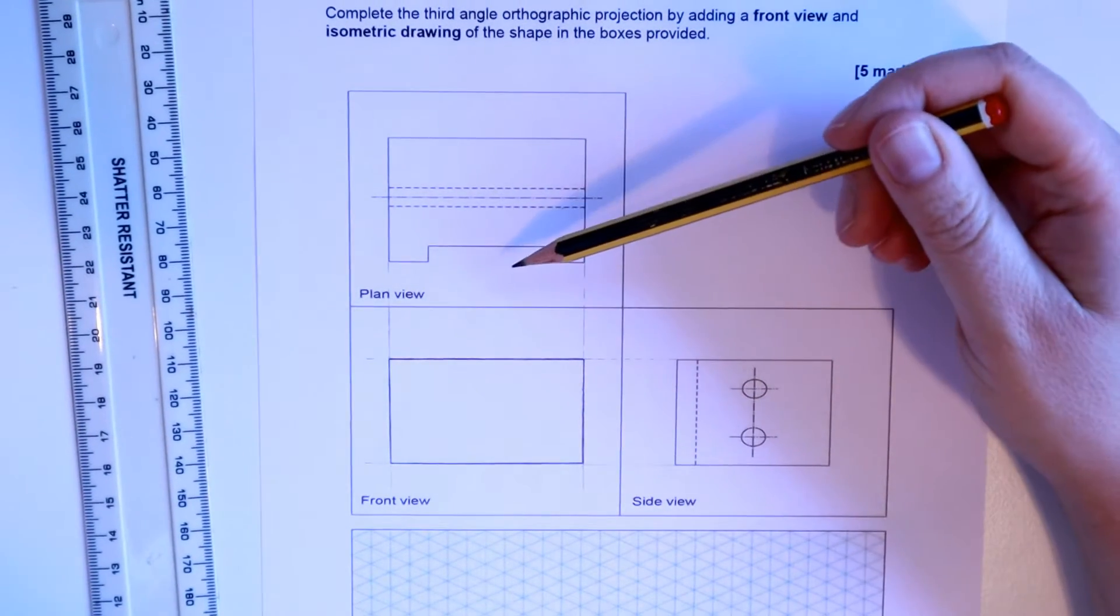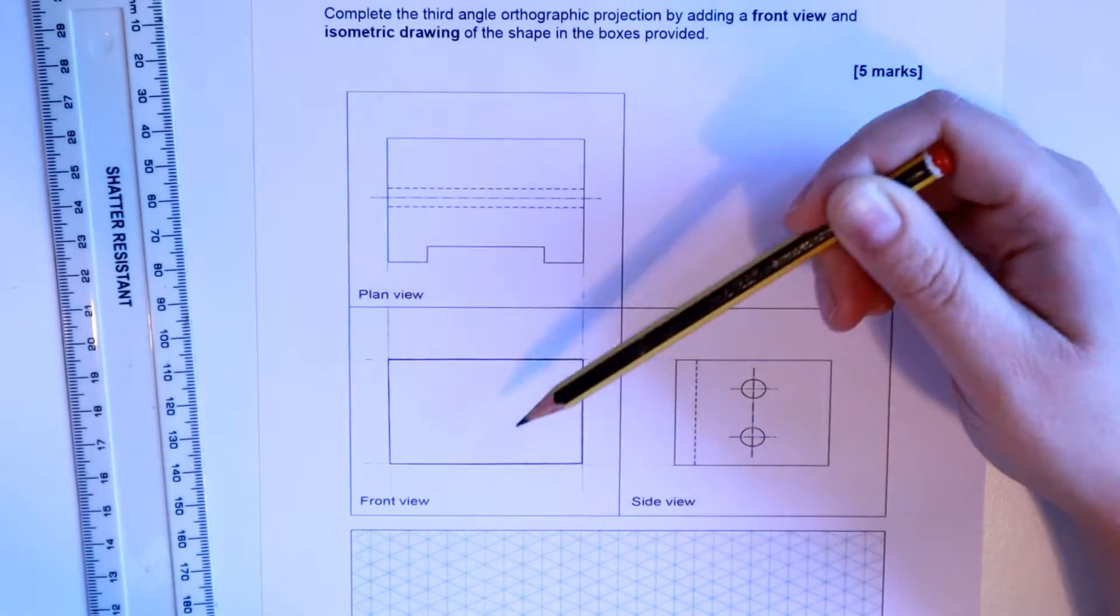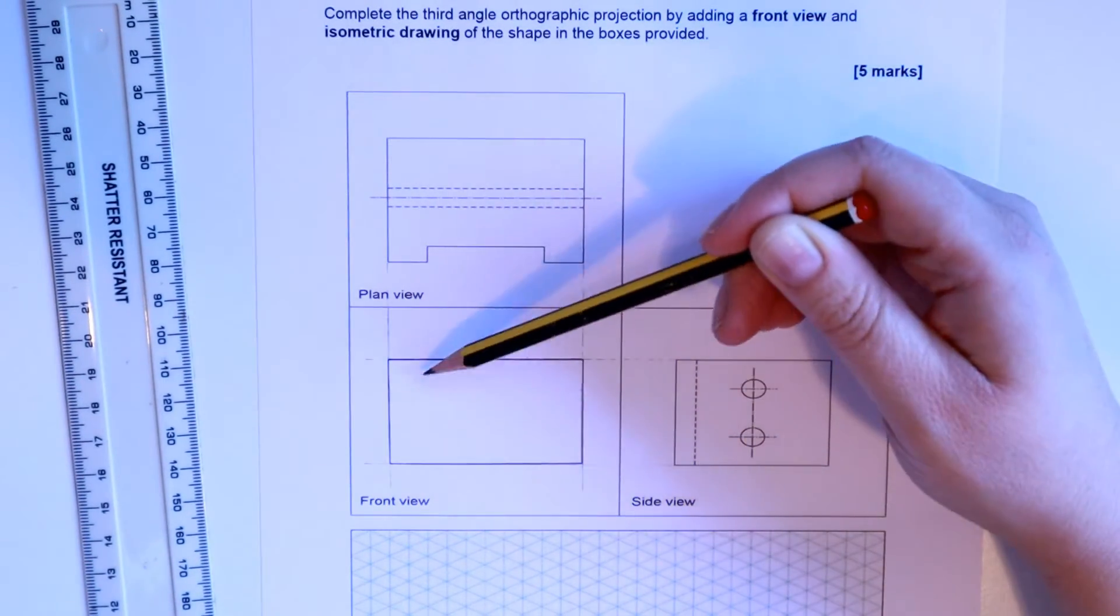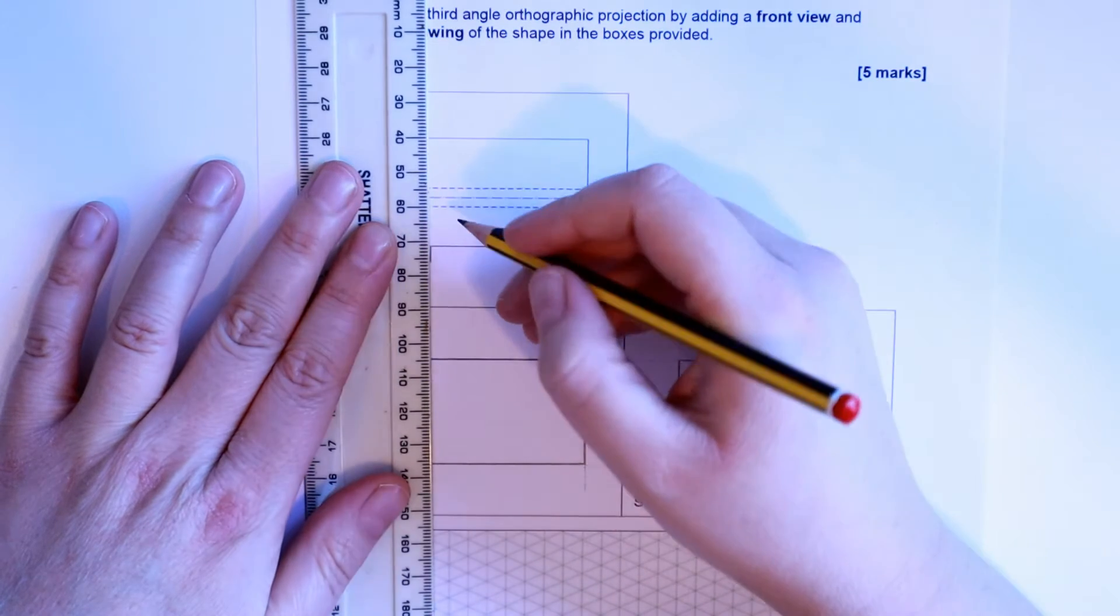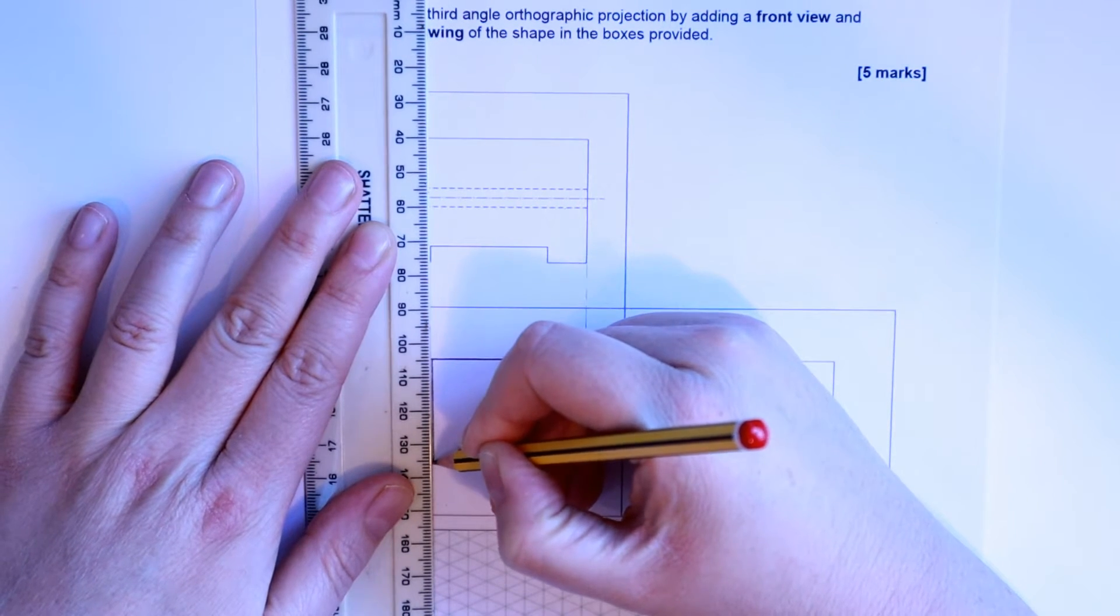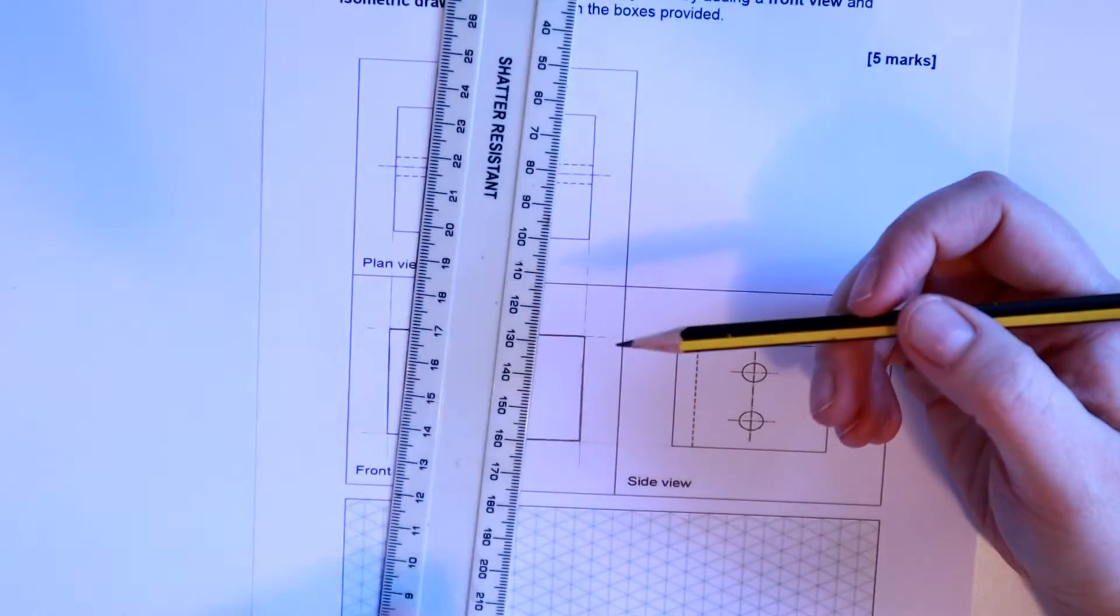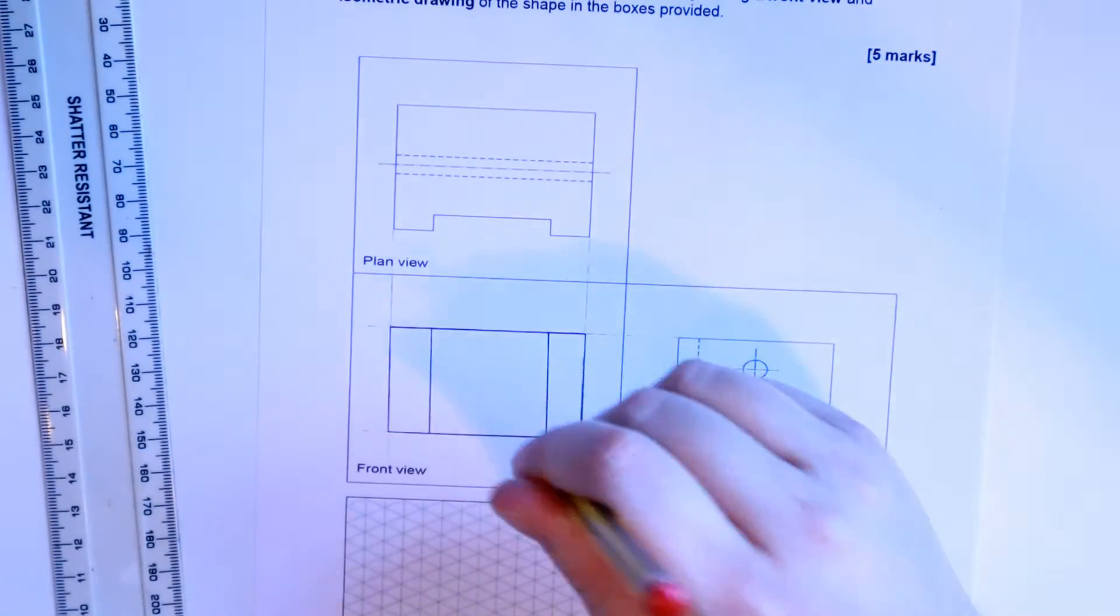Now what I can see on the plan view, the product goes in a little bit here. So I need to show that on the front view. What that's going to show as is solid black lines. It needs to be in line with the bit where it comes in and it should be a solid line. Because if you imagine this product showing in front of you, you would be able to see it sort of dip in like that.